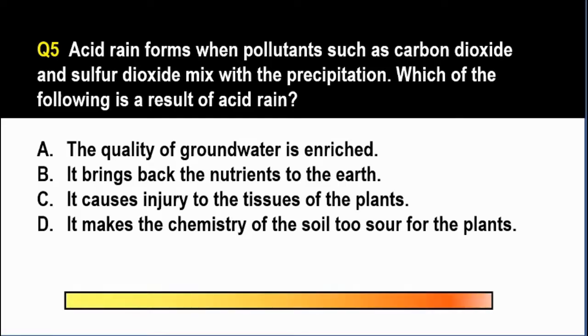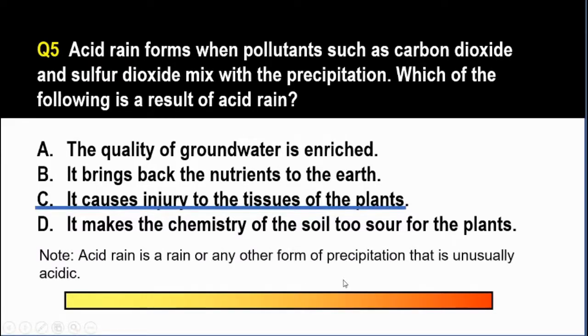Time's up! The correct answer is letter C. Because of the acidity from the acid rain, it can actually cause injury to plants. In fact, acid rain can damage the surfaces of buildings, our monuments, they can damage cars. So mas lalo that it will cause injury to the tissues of plants.